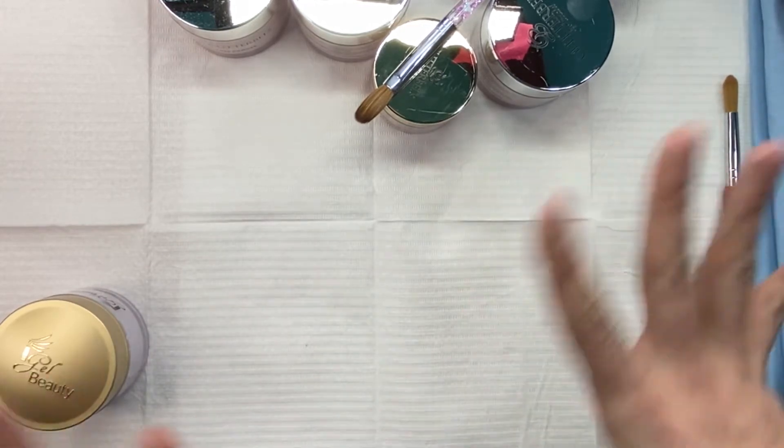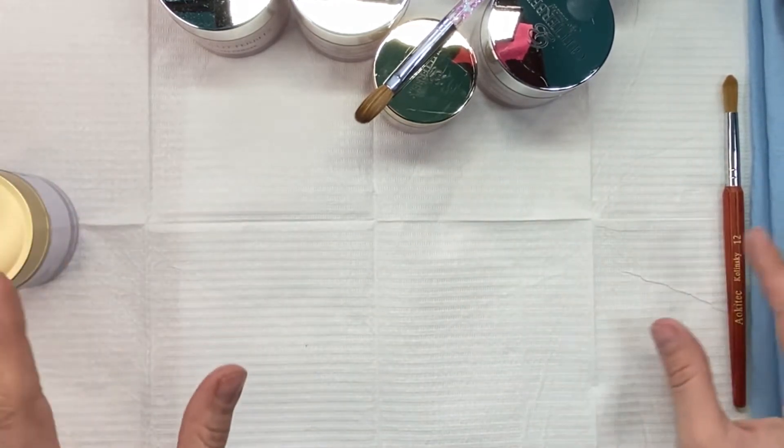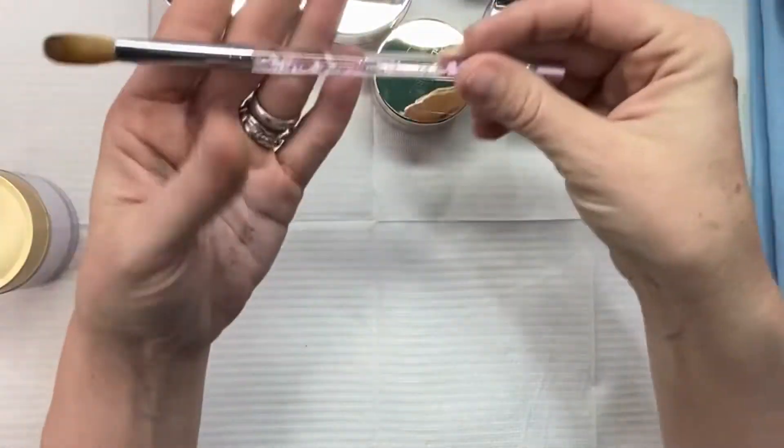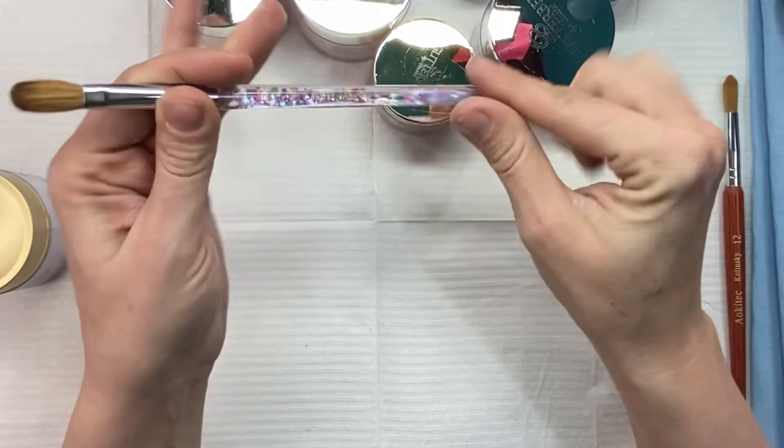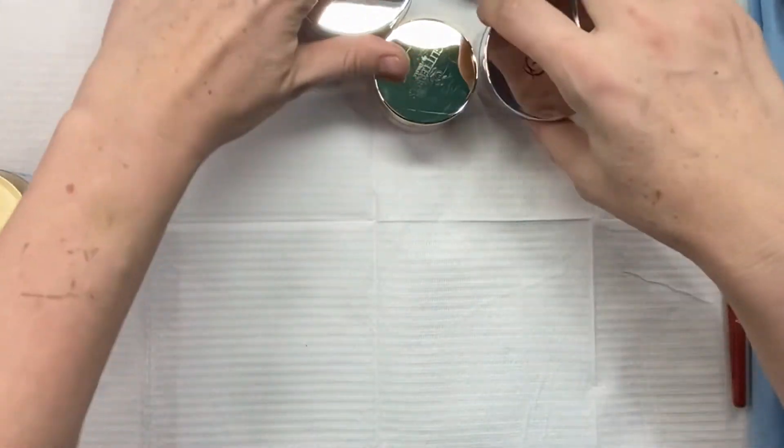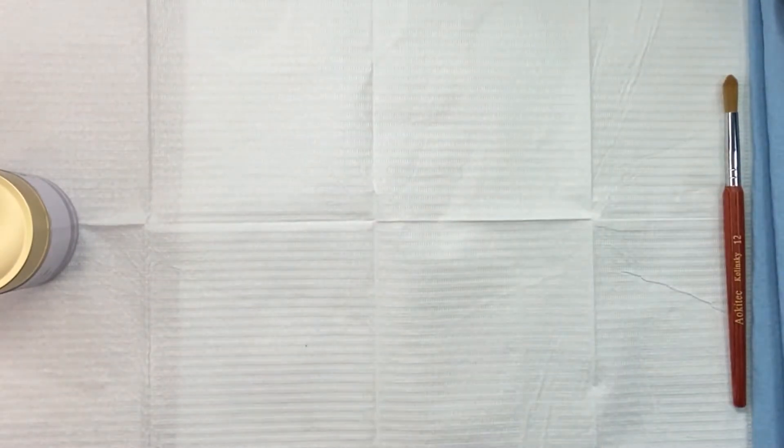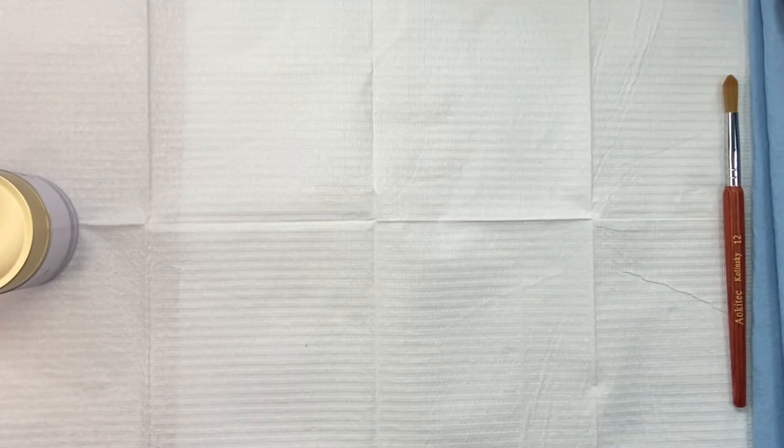Just want to show you what we got going on for the week. We got my Glitter Bells haul and the Glitter Bells brush which we're going to be reviewing probably tomorrow. I also got a lot of stuff from Glitter Bells this week, so I also got some poly gel.